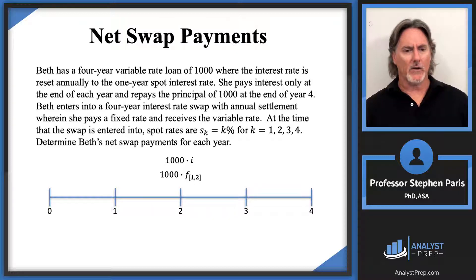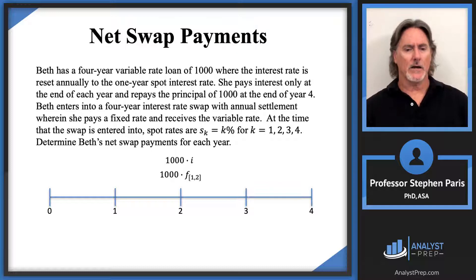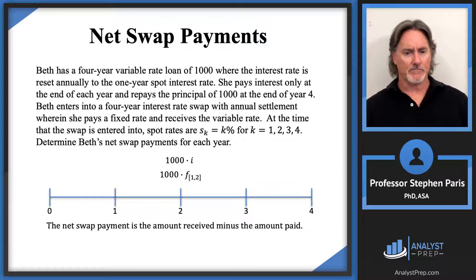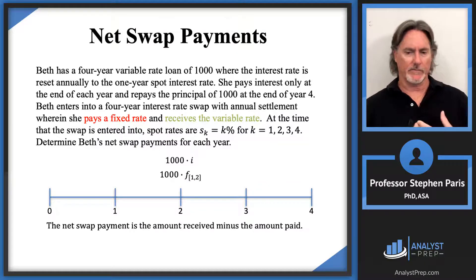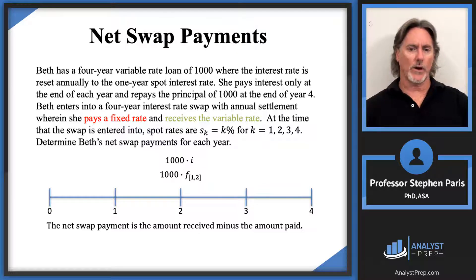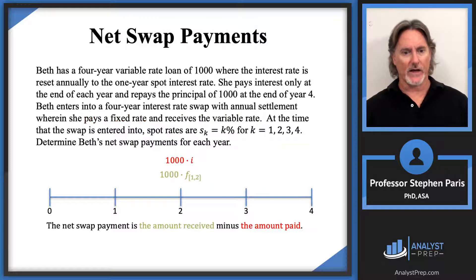Let's look at year two and get an idea of what's going on. The net swap payment is the amount that you're going to receive minus the amount that you're going to pay. In this case, the problem says Beth pays the fixed rate and receives the variable rate. I'm going to put in green what we're going to get — that's money we're getting — and in red what we're paying, which is going out. On my timeline, Beth is paying 1,000 times I and receiving 1,000 times the forward rate.